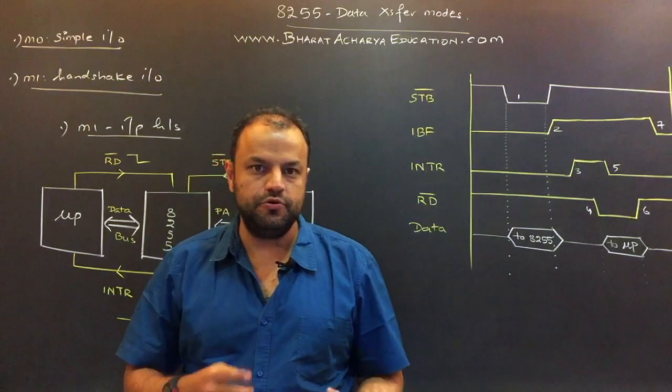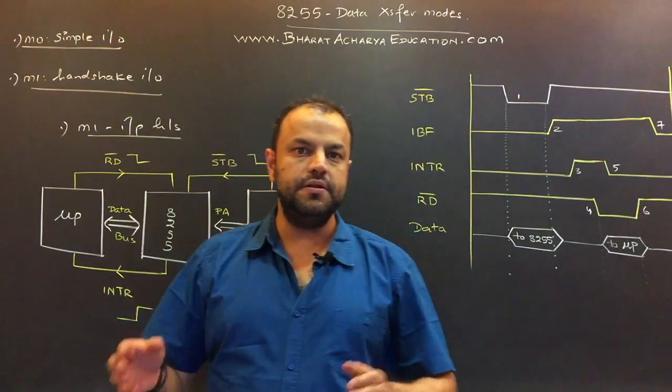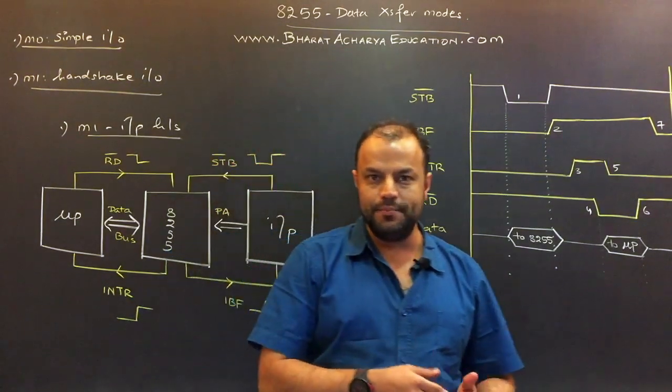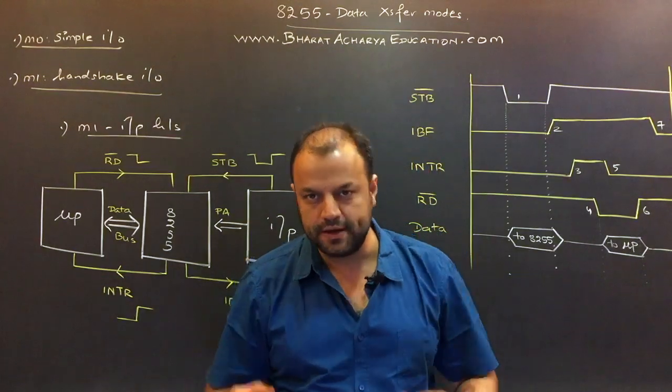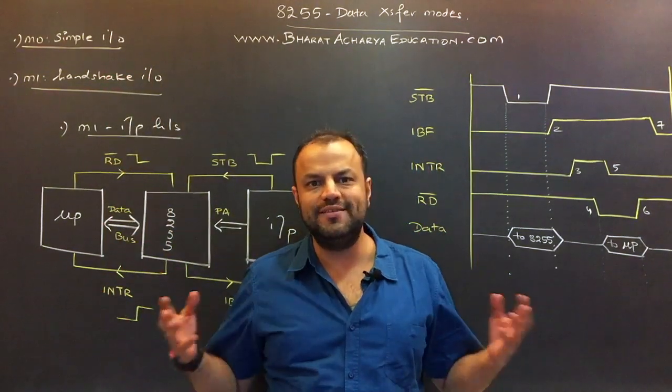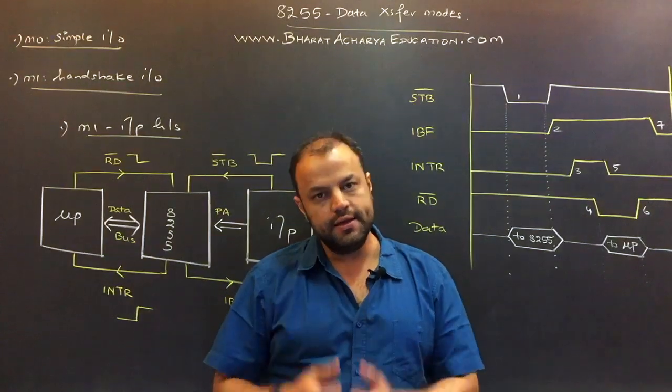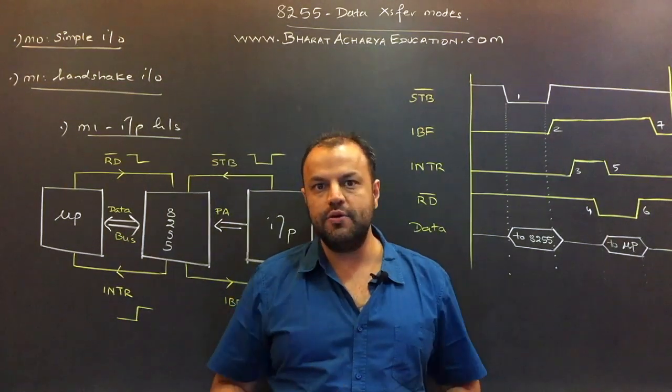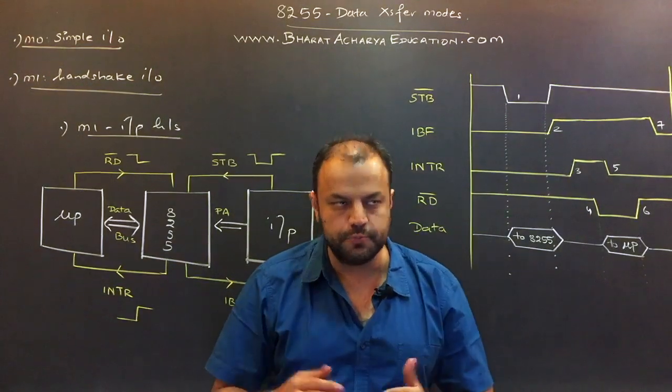Now, 8255 as you know has three ports: port A, port B, port C. They work in three different modes—mode 0, mode 1, and mode 2. Mode 0 is called simple I/O. There is nothing to explain in mode 0. It is simple I/O, so there is no handshaking. The advantage is all three ports are available. The drawback is there is no handshaking, so the reliability of the transfer is poor.